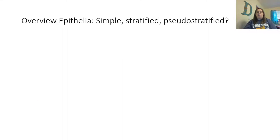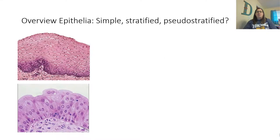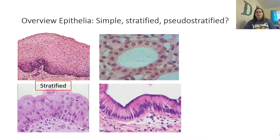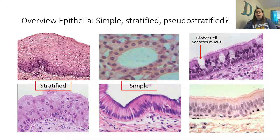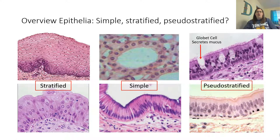Looking at examples: a tissue with multiple visible layers is stratified. A tissue with one layer is simple. When goblet cells are added and it looks like multiple layers but isn't, that's pseudo-stratified. Make sure you can identify tissues based on layers — simple, stratified, or pseudo-stratified — because this will be part of the practicum portion of your test on tissues.